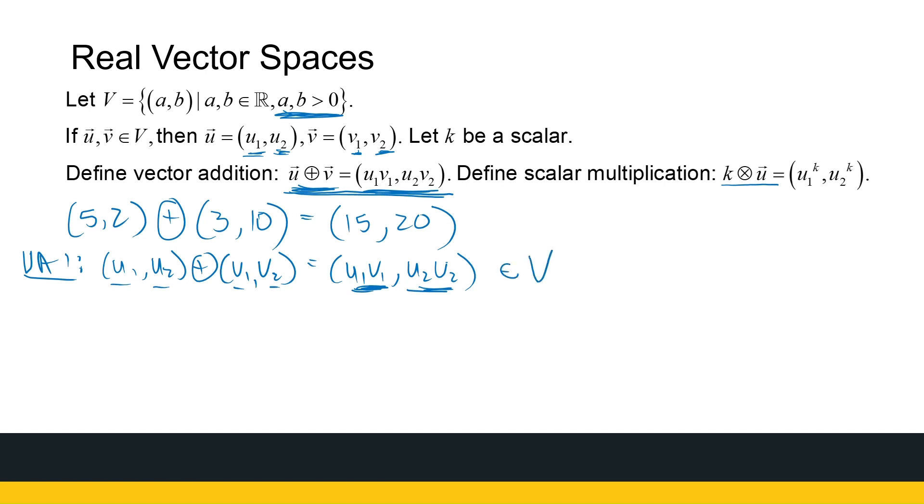All right, why is that? Well, U1 is positive and V1 is positive. Therefore, if I multiply them, my answer is going to be positive. Same with U2, it's positive, and V2 is positive. Therefore, if I multiply them, I get something positive. So the addition is definitely closed.